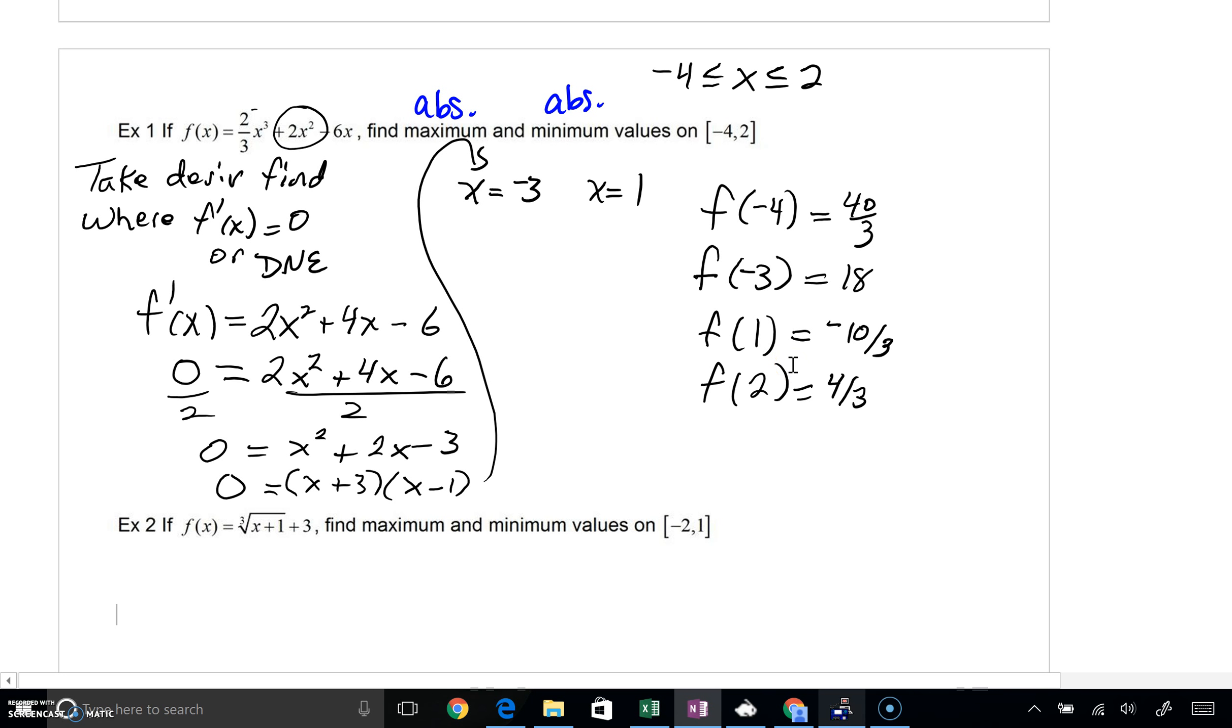In CalcVC, we're covering section 4.1. We left off with our first video almost done with example 1. You can see what's happened, just recapping. We took our derivative of our function. We found out where our derivative was going to equal 0. We found there were two x values.